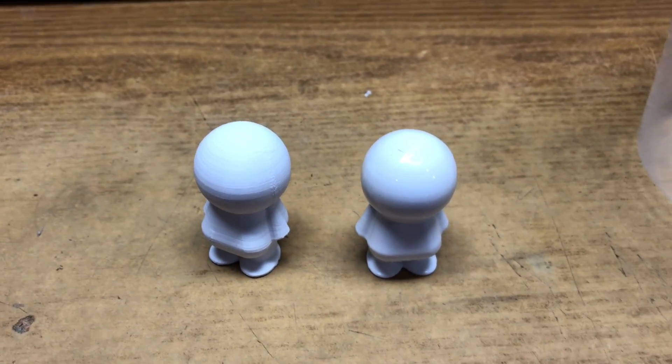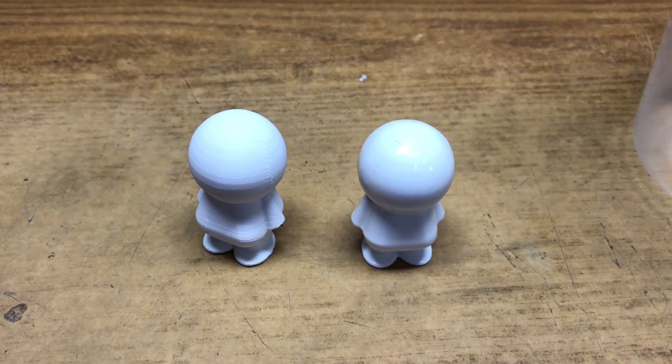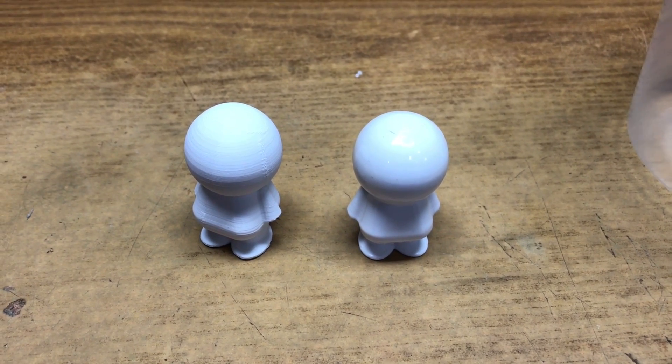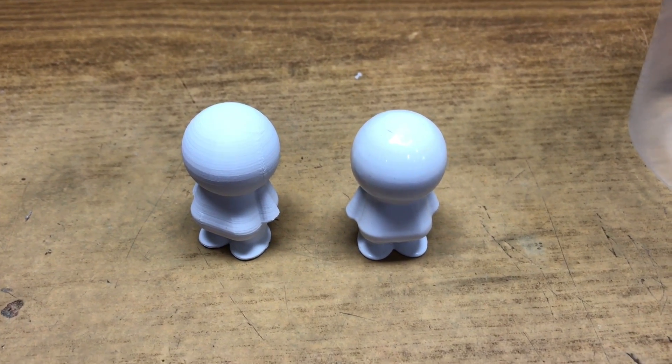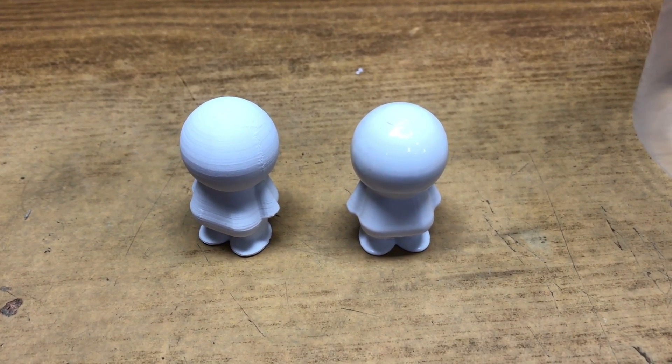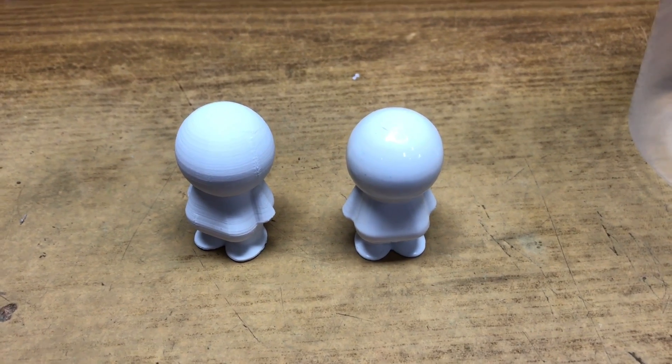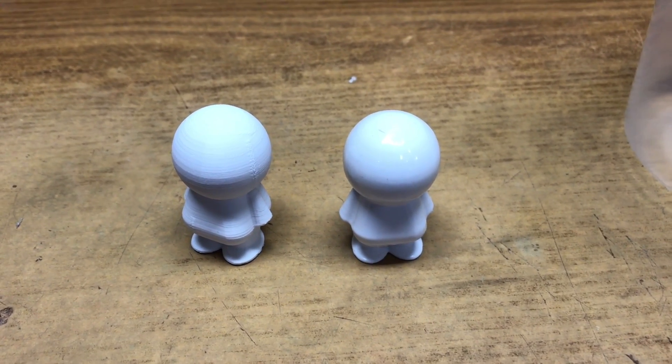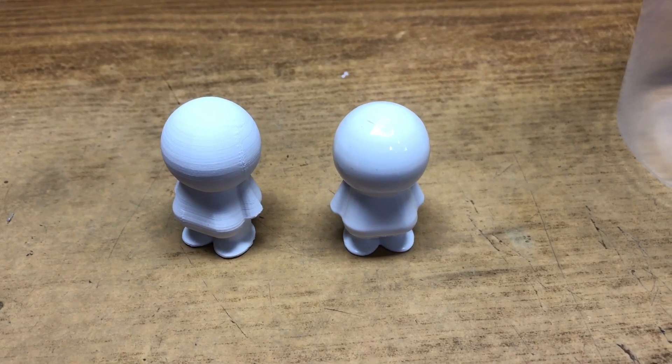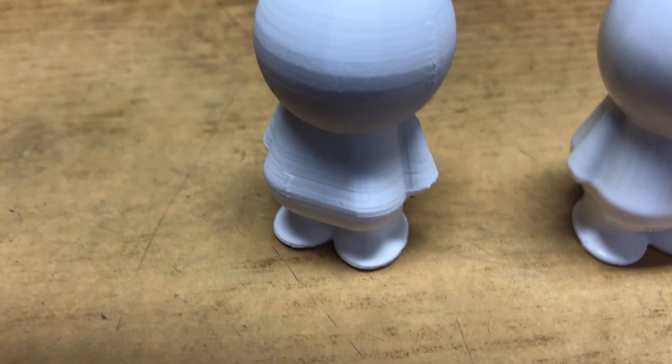I thought I'd do a quick video today on how I vapor smooth my 3D printed parts. I use ABS and acetone and I do a cold vapor smoothing. Now this here is a part before you can see